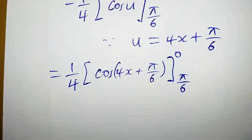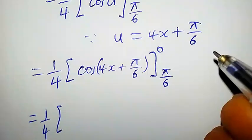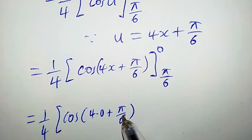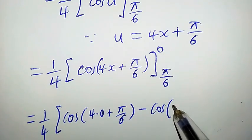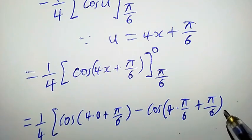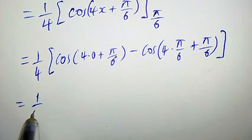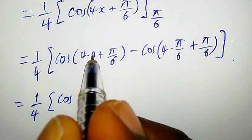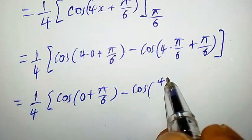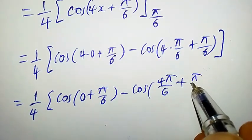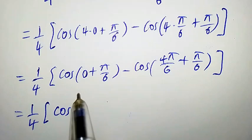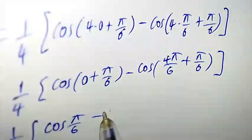This equals (1/4) times: the upper limit gives cos(4·0 + π/6) minus cos at the lower limit, which is cos(4·(π/6) + π/6). Simplifying: cos(0 + π/6) minus cos(4π/6 + π/6), which is cos(π/6) minus cos(5π/6).